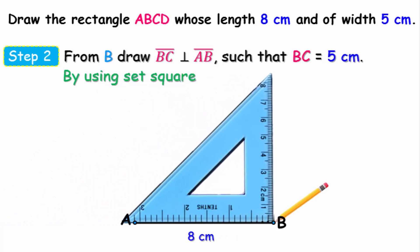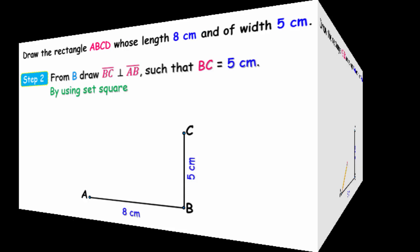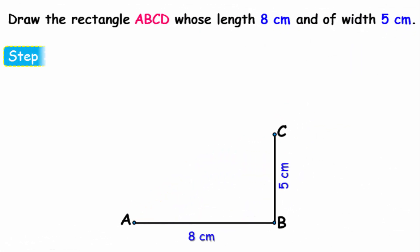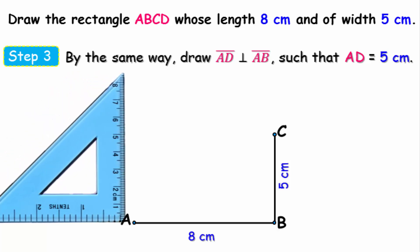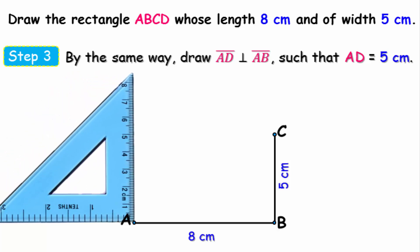Don't forget to use the pencil to avoid mistakes and make the drawing clear. The third step, by the same way, we will stand at point A and draw a perpendicular line on AB such that the length of AD equals 5 centimeters as you can see now, and don't forget to write the symbols for this straight line.